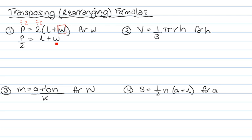So now P over 2 equals L plus W. Now from there we still want W to be on its own. So now I need to get rid of that L. There's nothing at the front so that means that L is positive. So I take L from both sides. So now I have P over 2 take L equals W. And we're now right because we have W on its own.